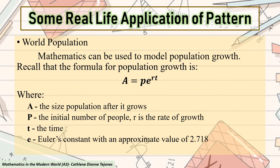We also have another real-life application, which is world population. As of 2017, it is estimated that the world population is 7.6 billion. World leaders, sociologists, and anthropologists are interested in studying population, including its growth. Mathematics can be used to model population growth. Let us recall the formula for population growth, which is A = Pe^(RT). This formula is also called exponential growth or exponential decay.